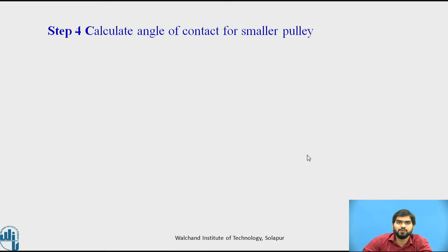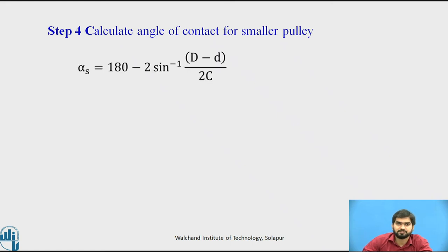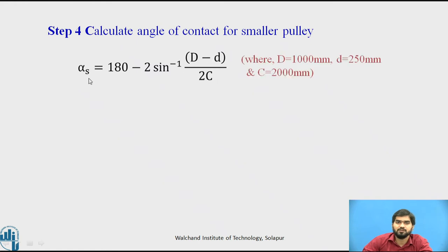Step 4: Calculate the angle of contact for the smaller pulley, also called the wrap angle alpha_s. Using the standard equation with capital D, small d, and center distance C, we calculate alpha_s = 158.39 degrees.